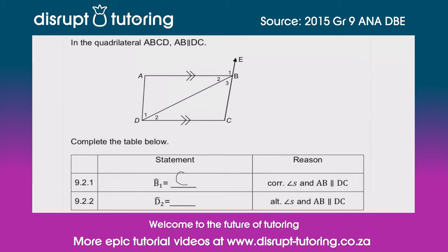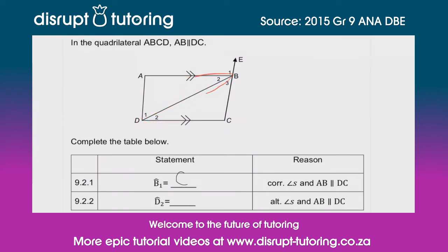The Z forms using the parallel sides. If we form our Z — do you see there's our Z? — that would mean that D2 is equal to B2, and that gets you all the marks for this question.